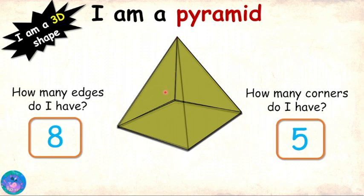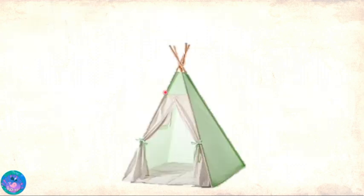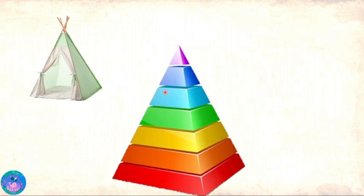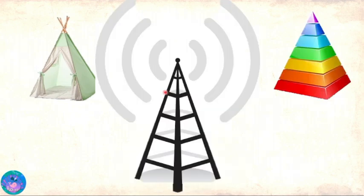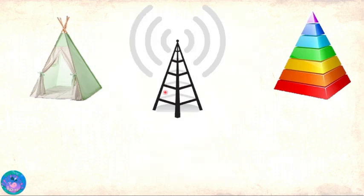Now Zoe, you know me well. Can you identify some objects that have my shape? Of course. This tent. This toy that belongs to my little sister. And the cell phone tower. All of these objects have a pyramid shape, or I can say that they are pyramidal.